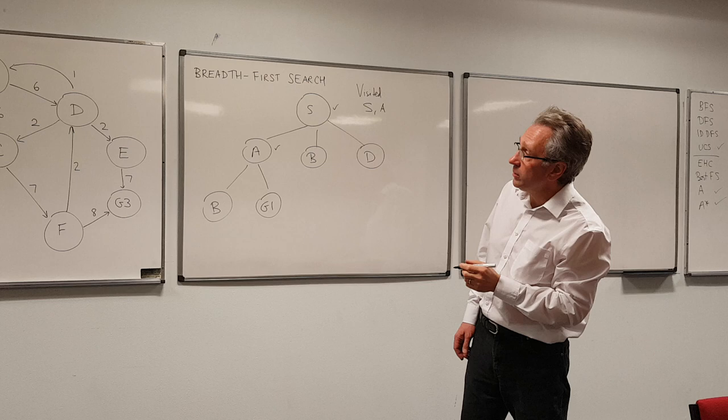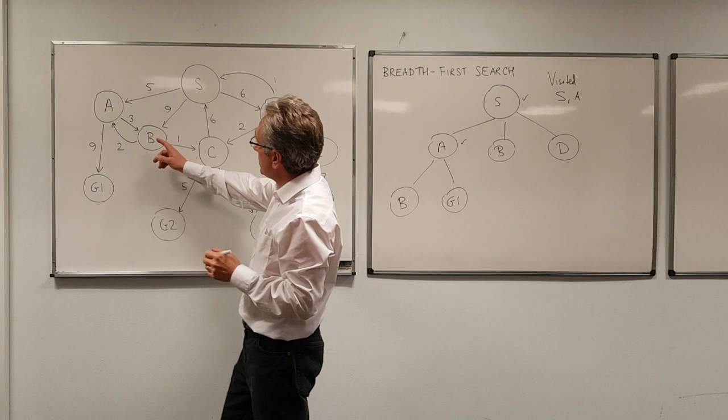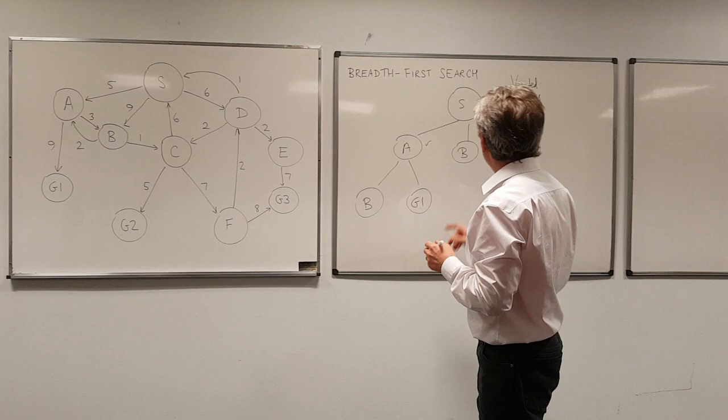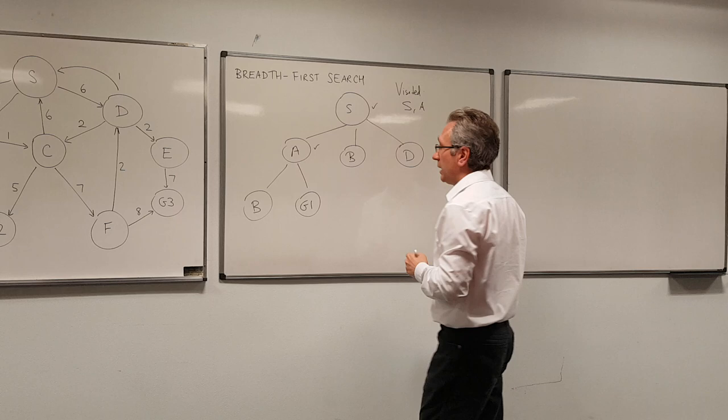Now we go to node B. You notice that from node B, I can get to node A and I also can get to node C. But because A has already been visited, I don't add it to the tree. There's no point in adding it to the tree. So I just add C here.